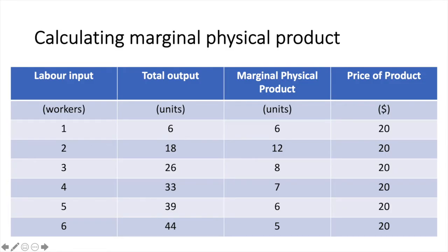I've put together some made-up numbers to help us calculate marginal physical product. The first column is for our variable input labour. The second column is a tally of their total product — that is the total amount produced with the given amount of labour. The third column is marginal physical product. This is the difference between the current level of output and the previous level of output, divided by the change in the number of workers. I've only increased the number of workers by 1 in each instance to keep the calculation simple.